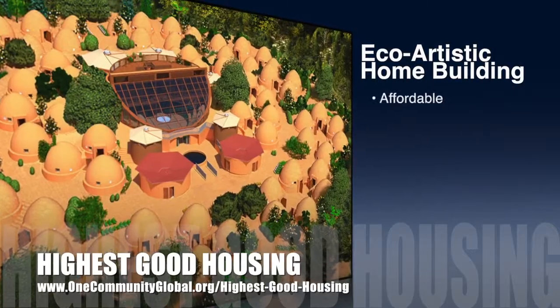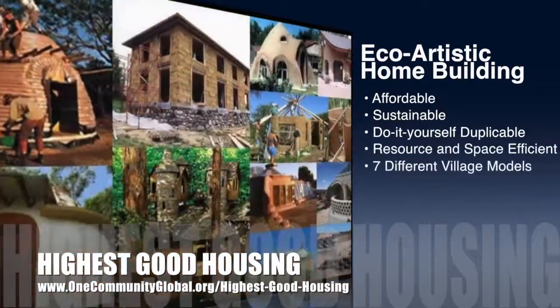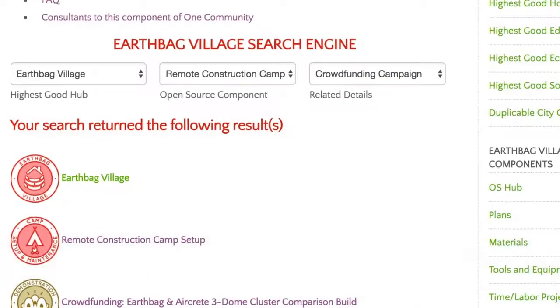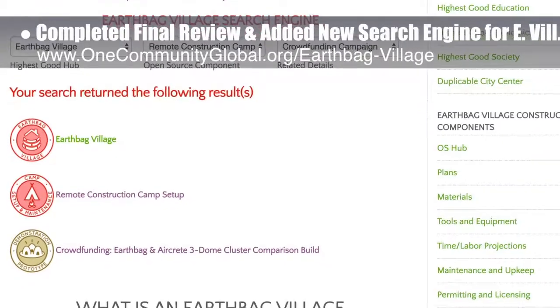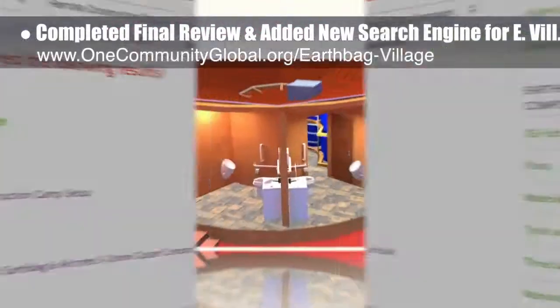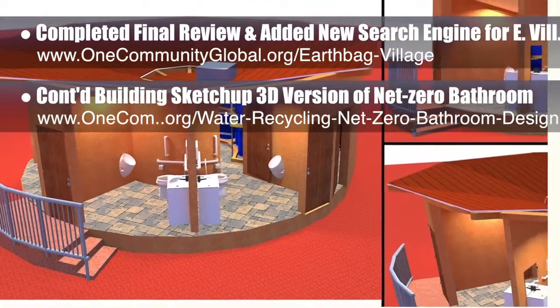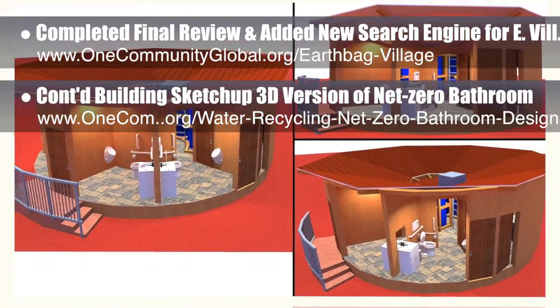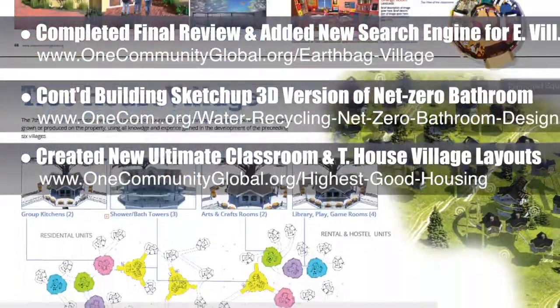One Community's approach to highest good housing is eco-artistic home building that is affordable, sustainable, do-it-yourself duplicable, resource and space efficient, and consists of seven different sustainably constructed village models. This week, the core team completed the final review and added the new search engine for the EarthBake Village open source hub. The core team also continued building the SketchUp 3D version of the Net Zero bathroom for the EarthBake Village — updating the roof support structure, changing the roof from six to eight panels, and updating the height of all inside building walls. In addition, the core team created new ultimate classroom and treehouse village layouts for the seven villages online book, as you can see here.